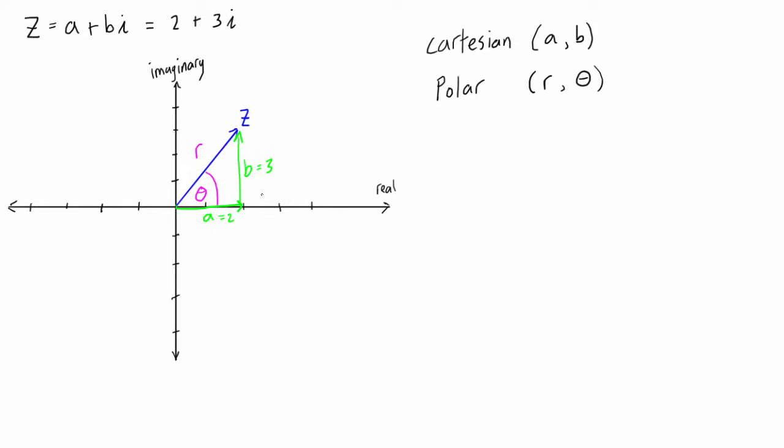All right, so the first thing that we can do here is we can figure out really easily what r is, because r is just equal to the modulus of z, which was equal to the square root of a squared plus b squared. And again, if you look at this geometrically or thinking about this as a triangle, it's basically Pythagorean theorem where a squared plus b squared equals c squared.